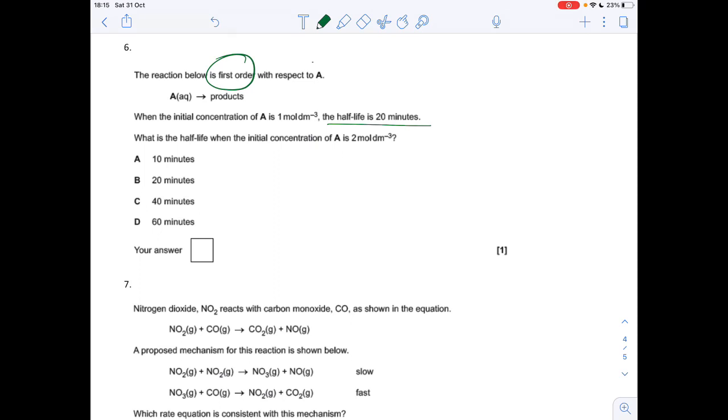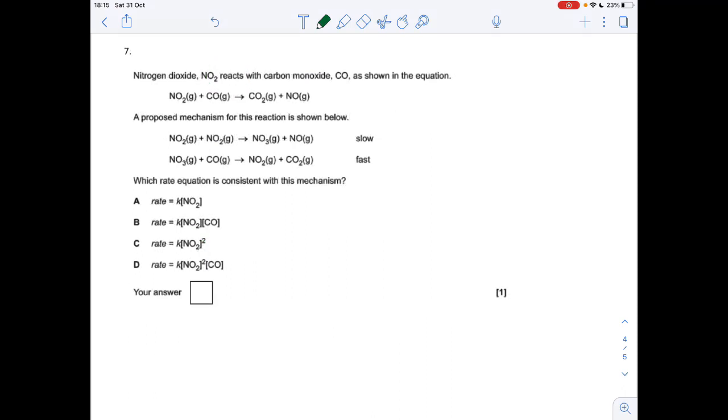And finally, we've got a proposed mechanism for the reaction, and we've got to decide which is the consistent rate equation. It's all linked to the slow step - that's the rate determinant step. That means that in the rate equation we must only have these chemicals, so we've got NO₂ plus NO₂. In other words, it's going to be option C.